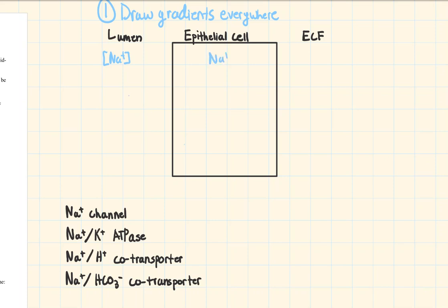When I say draw your gradients everywhere, there are three places you should be drawing each gradient: in the lumen, in the epithelial cell, and in the ECF. We learned in part one that the sodium gradient is always high outside of the cells and low inside, and the chart says the gradient for sodium represents the typical ICF versus ECF concentrations.